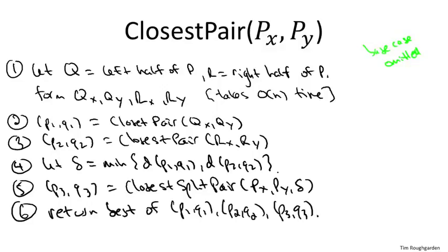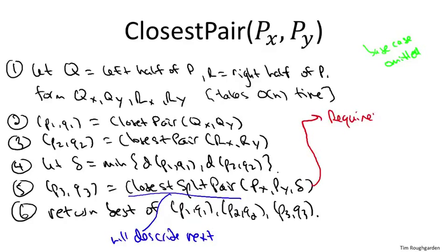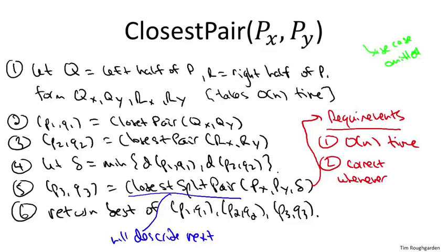To be crystal clear on what we demand of the subroutine: we want the running time to be O(n) always. For correctness, we don't need it to always compute the closest split pair, but we need it to compute the closest split pair whenever there exists a split pair of distance strictly less than delta — strictly better than the outcome of either recursive call. Now let's go through the pseudocode for this closest split pair subroutine. It's fairly straightforward to see it runs in linear time; the correctness requirement will be highly non-obvious.